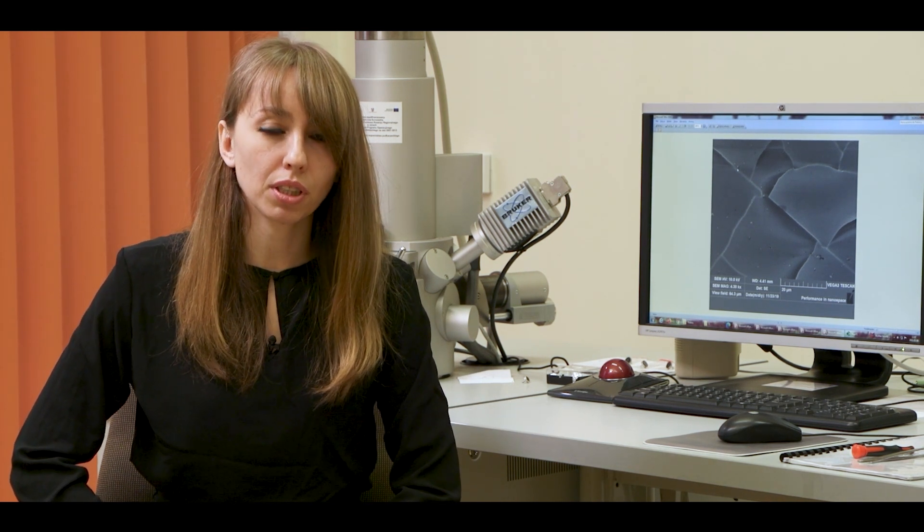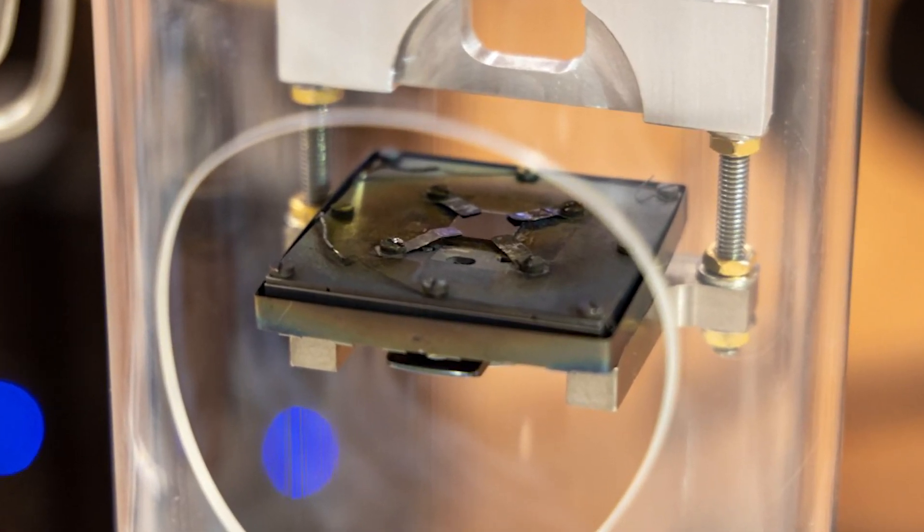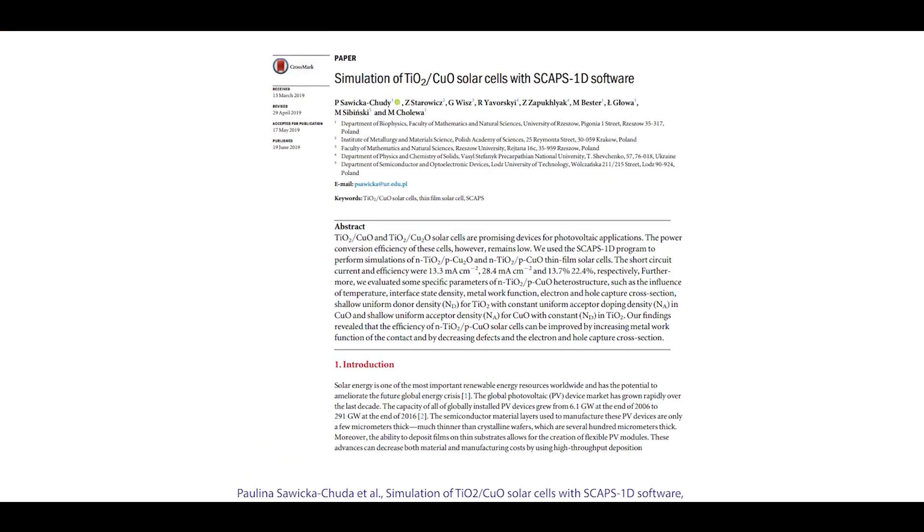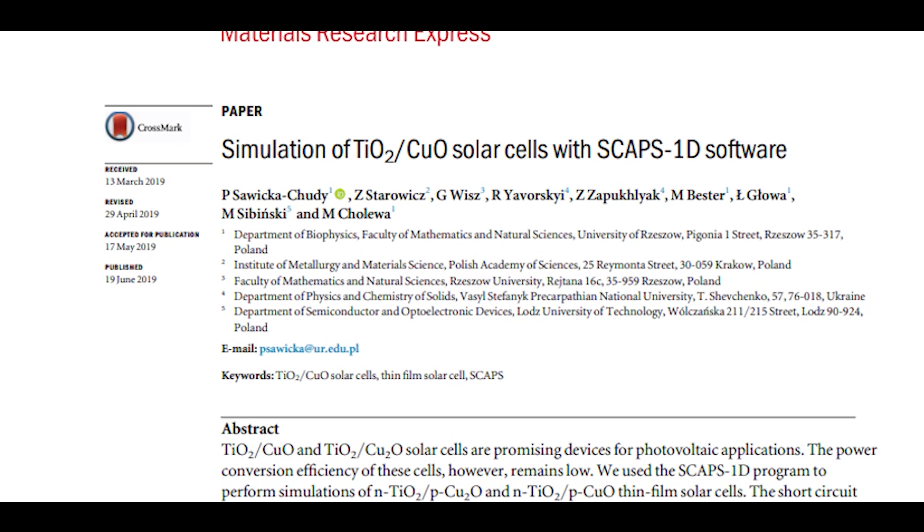Dear ladies and gentlemen, semiconductors made of metal oxides are promising materials for photovoltaic applications. In this video I would like to summarize one of our articles published in Material Research Express.